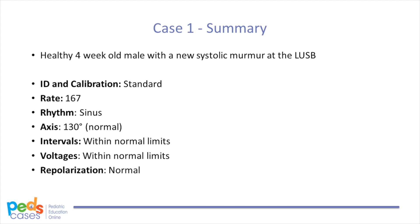Now that we've gone through the ECG in detail, let's review our case. Our patient was a 4-week-old male with a new systolic murmur at the upper left sternal border. We interpreted his ECG using the following approach: ID and calibration, rate, rhythm, axis, intervals, voltages, and repolarization. By working systematically, we determined that his ECG shows normal sinus rhythm at a rate of 167 beats per minute, a normal mean QRS axis of plus 130 degrees, no conduction disturbances, normal voltages, and no repolarization abnormalities. We concluded this is a normal ECG. With reassurance from the ECG, our patient was followed clinically. The murmur was determined to be a benign systolic pulmonary flow murmur of infancy, as suspected, and disappeared by six months of age. He remained asymptomatic from a cardiac perspective and continued to thrive.